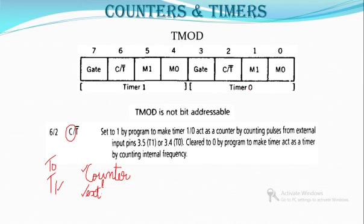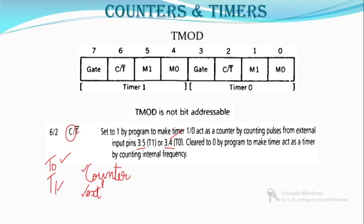Whenever bit 2 is set it means timer 0 will work as a counter to count the external frequencies received at pin 3.4. Timer 0 is on pin 3.4 and timer 1 is on pin 3.5. If the C/T bit is cleared to 0, the timer will act as a timer counting the internal frequency. So counter means counting external frequency and timer means counting internal frequency.